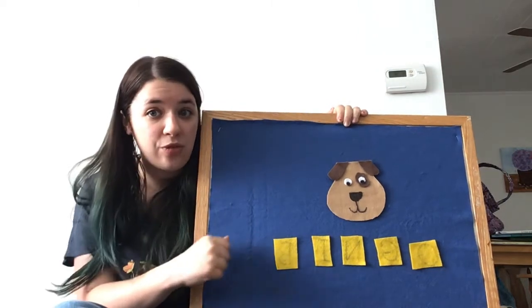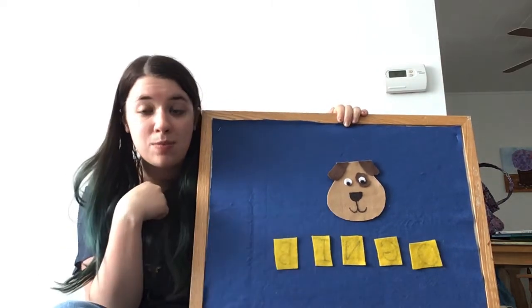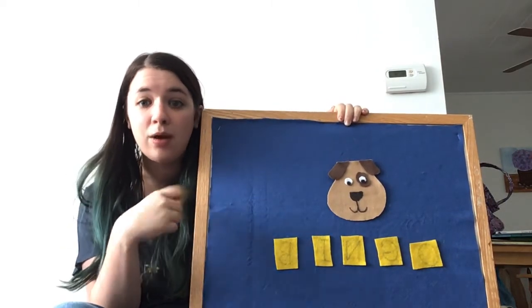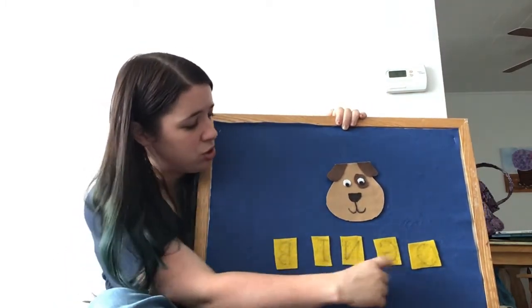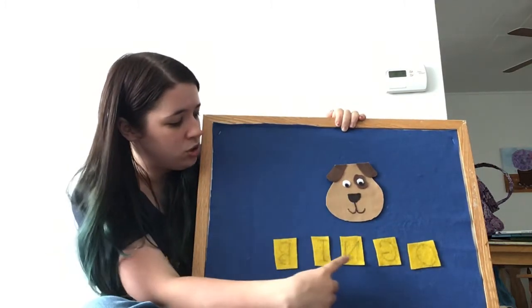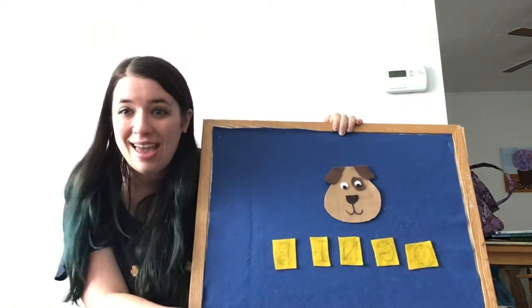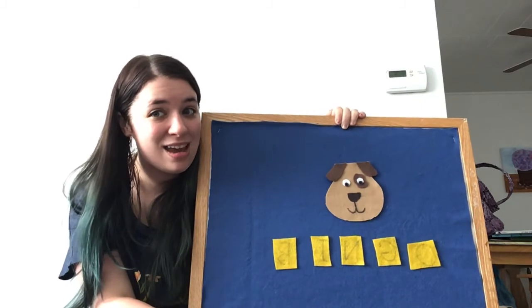There was a farmer who had a dog, and bingo was his name. Oh. Shh-Shh-Shh-Shh-Shh. Shh-Shh-Shh-Shh-Shh. Shh-Shh-Shh-Shh-Shh. And bingo was his name. Oh.